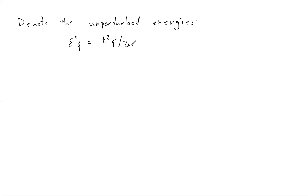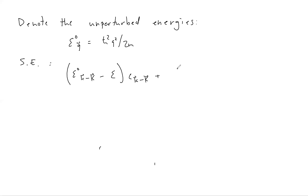With this notation, the Schrödinger equation becomes: [E0(k minus K) minus E] times C(k minus K), plus the sum on K prime of U(K minus K prime) times C(k minus K prime), equals zero.